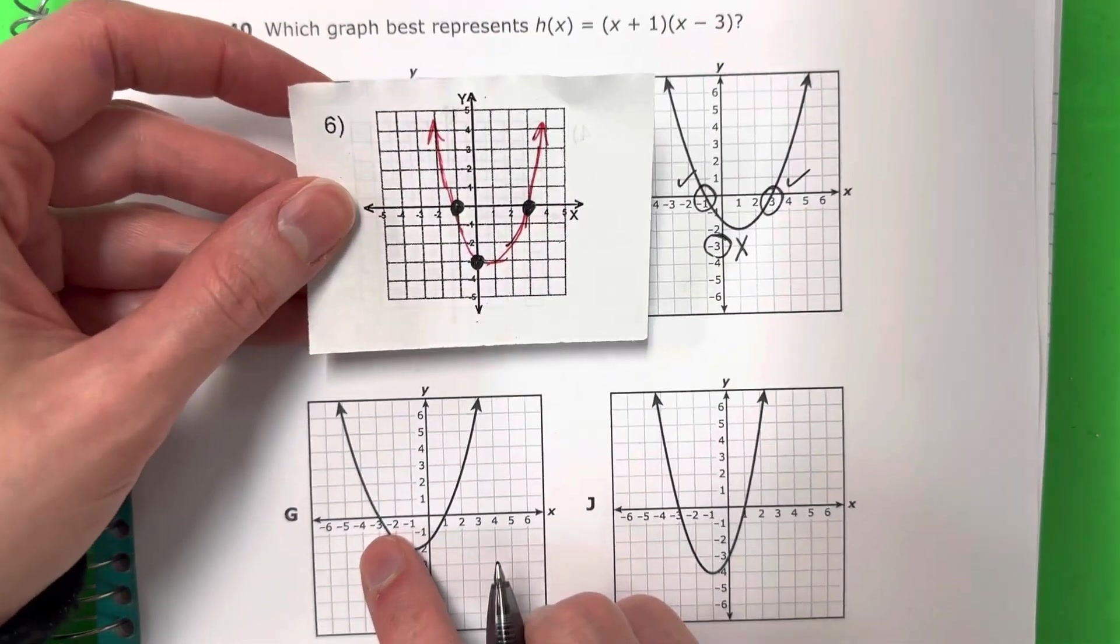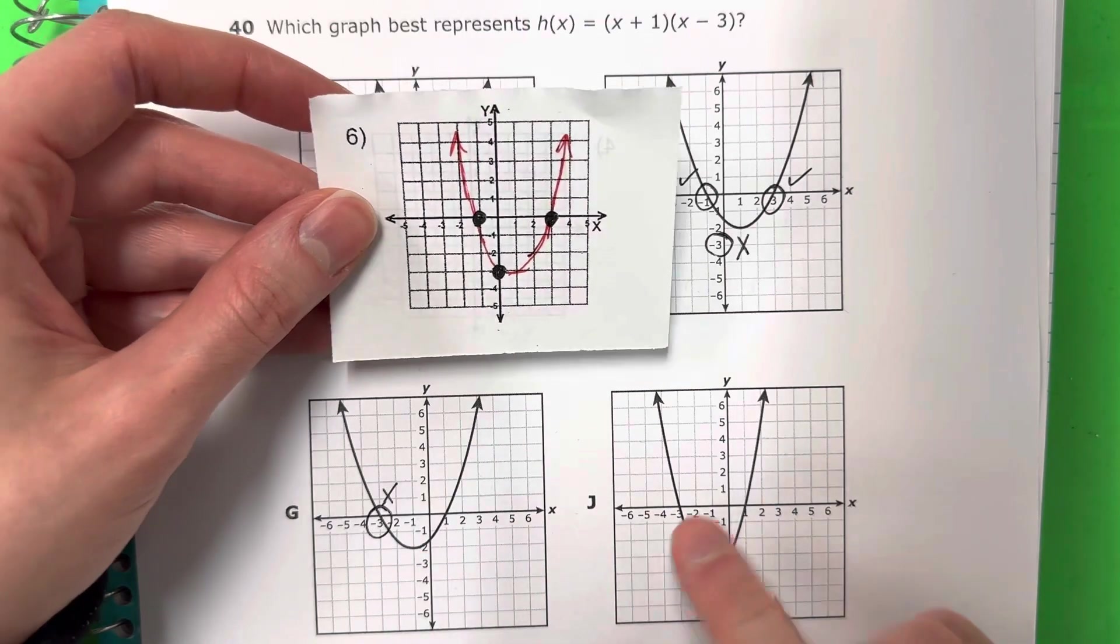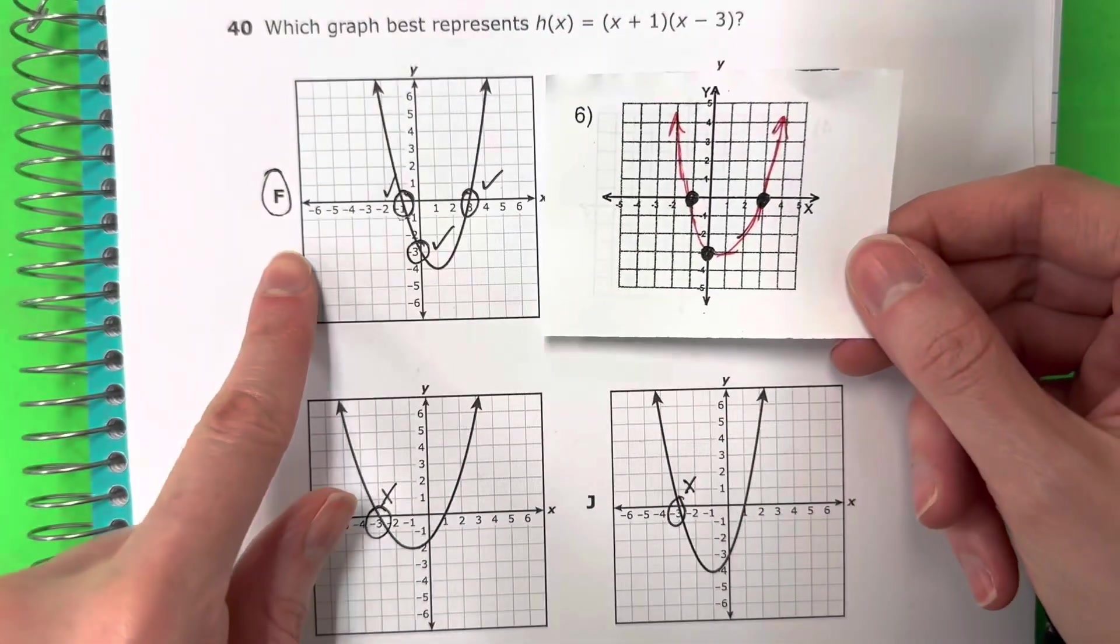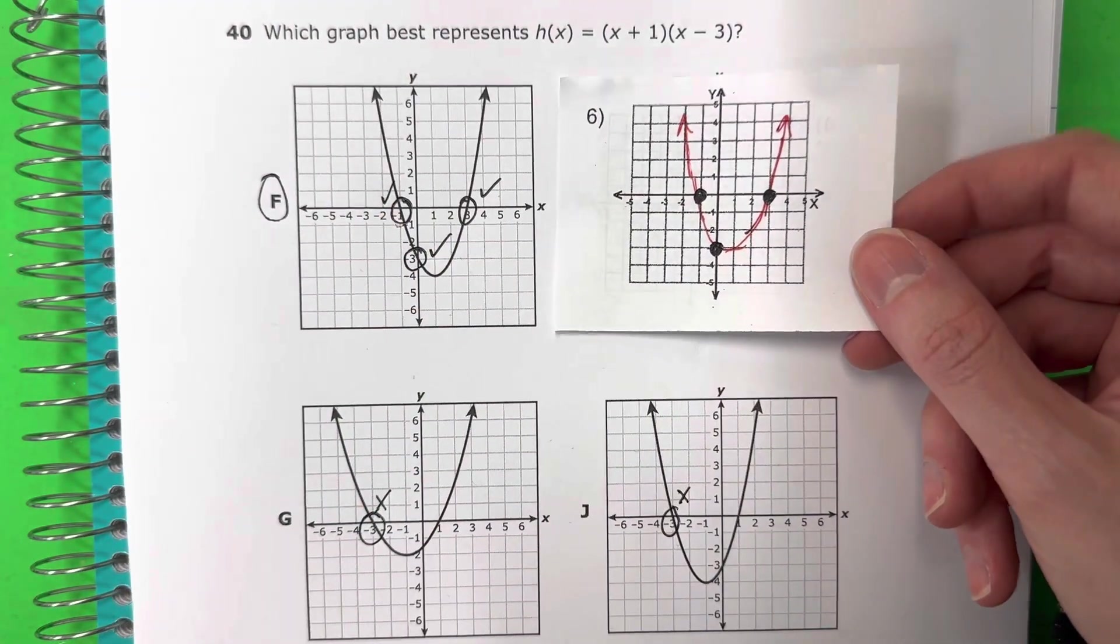Let's take a look here, okay? It looks like this is negative 3. That's not good, right? Here also negative 3. That's not good. So the correct answer is F because it touches all of those points that I found in my calculator.